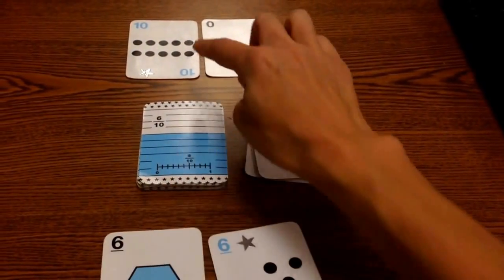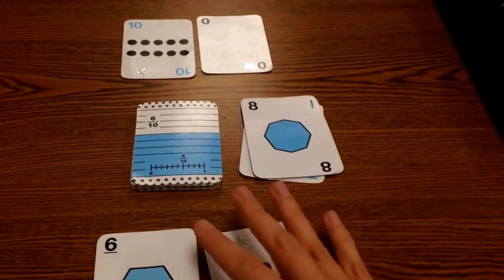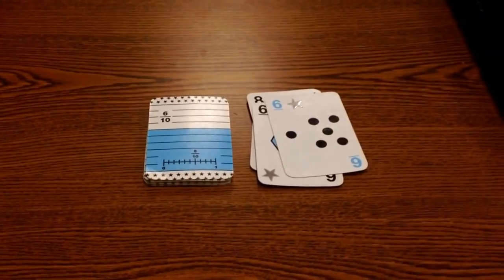6 plus 6 is 12. 10 plus 0 is 10. So, because I got the higher number, I get to keep all these cards.